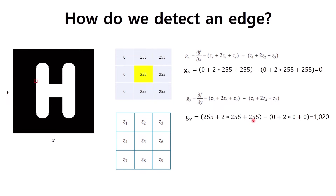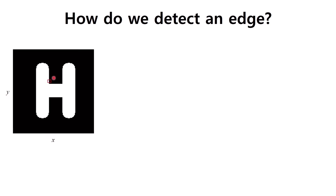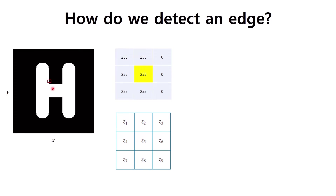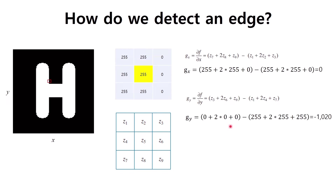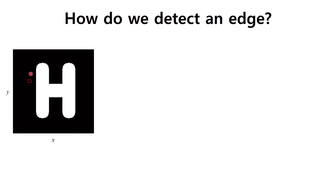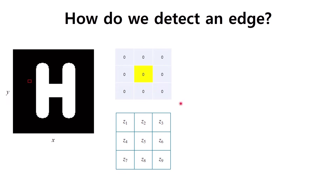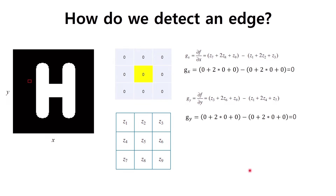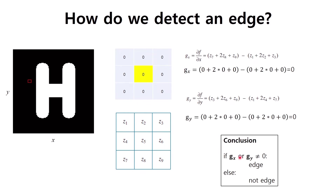As you can see, Gy is non-zero, which means the center of this 3x3 region is an edge. Similarly, taking a 3x3 region from another part of the image, Gy is again not zero, meaning the center pixel is an edge. If we take a 3x3 region where all pixels have the same intensity value, both partial derivatives will be zero and this is not an edge. In conclusion, if Gx or Gy is not zero, the center pixel is an edge; if both are zero, it is not.